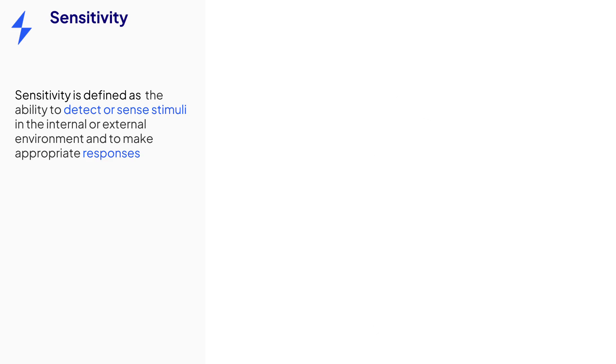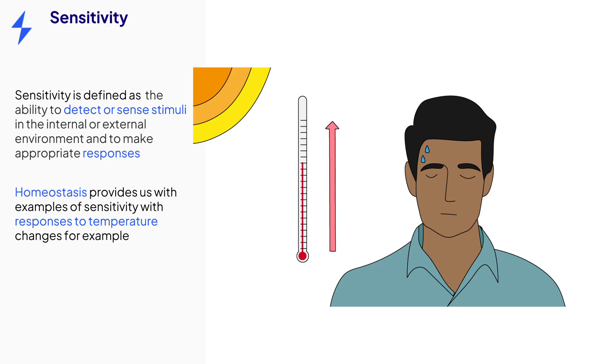Sensitivity is an organism's ability to detect or sense stimuli from their internal or external environment and then to make an appropriate response. An example of this may be an increase in temperature, which is the stimulus, and the human skin which then may start to sweat in response.